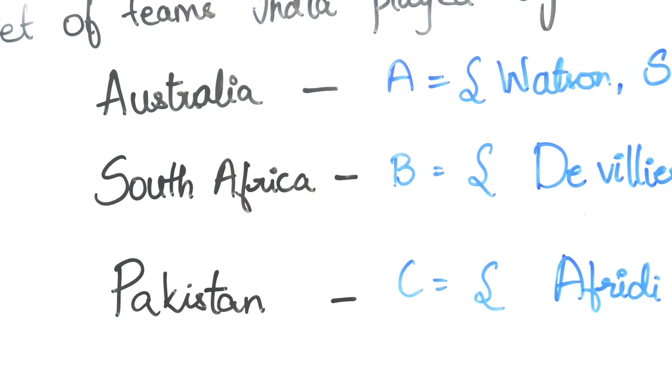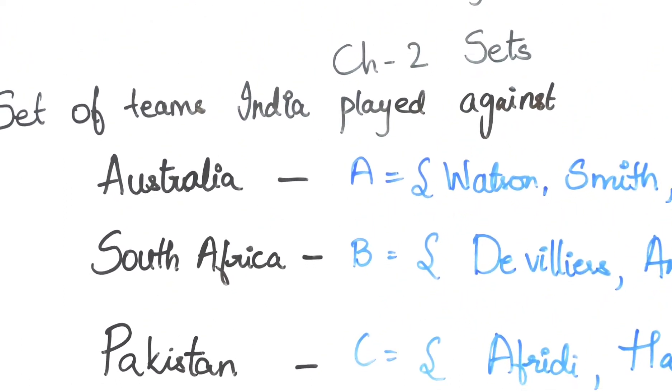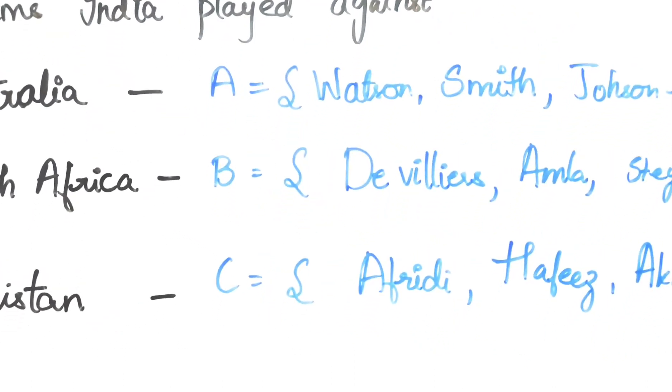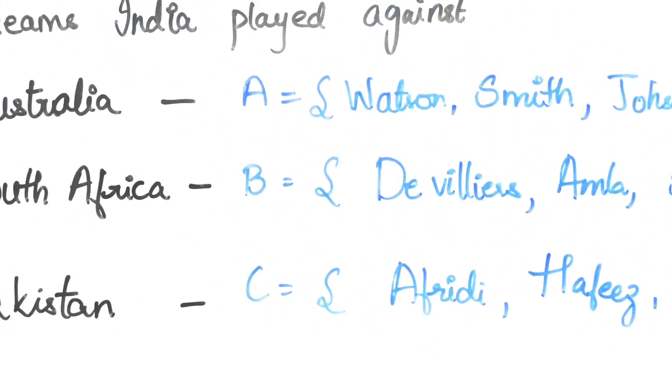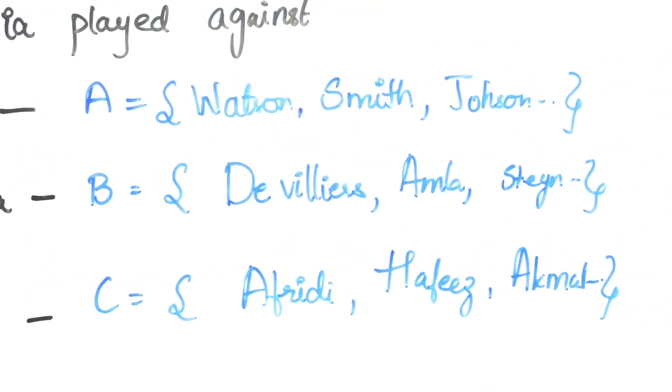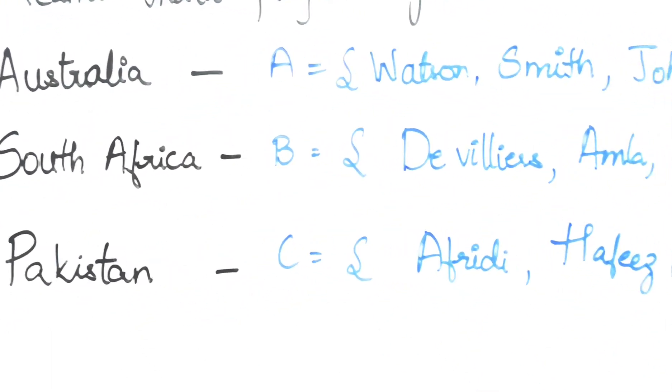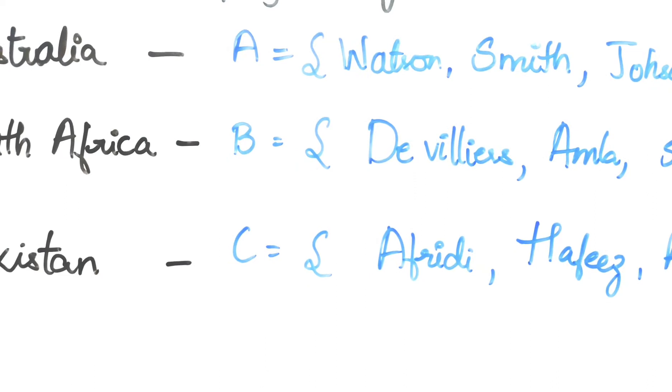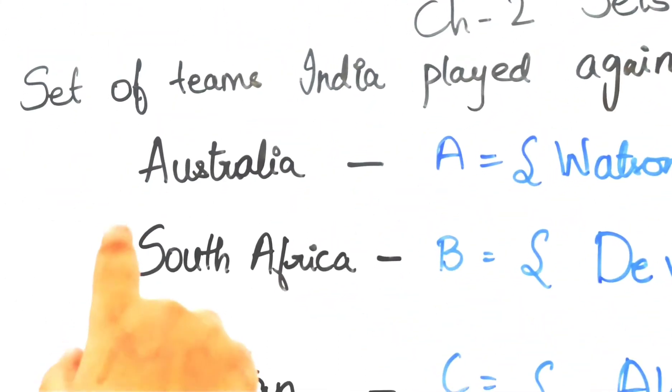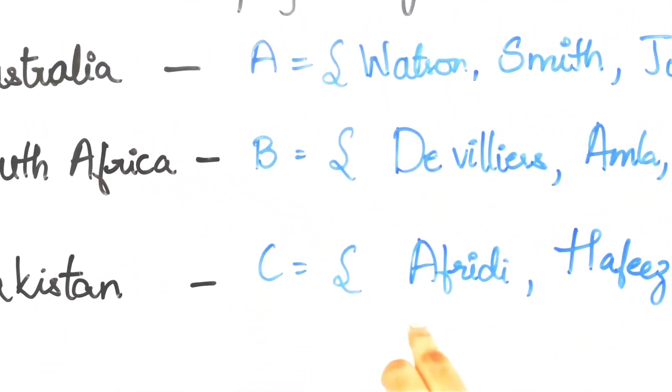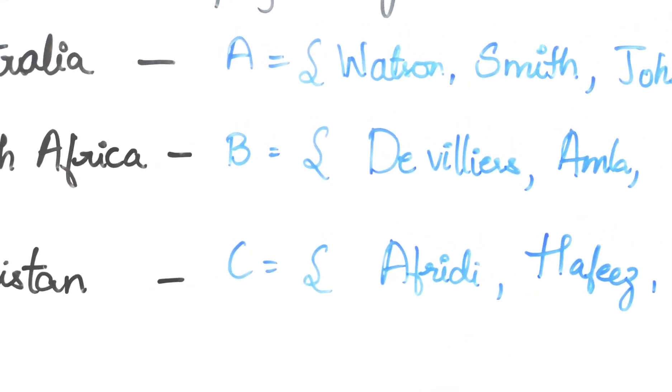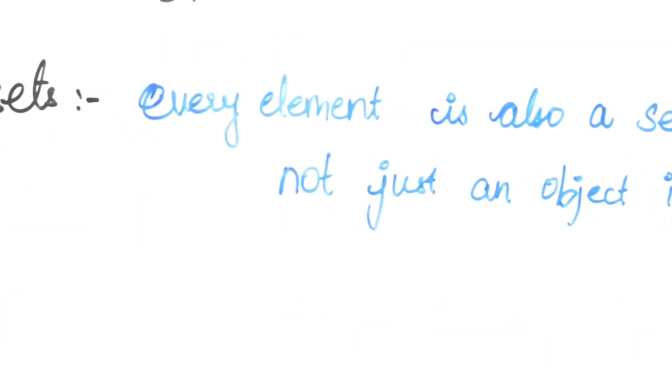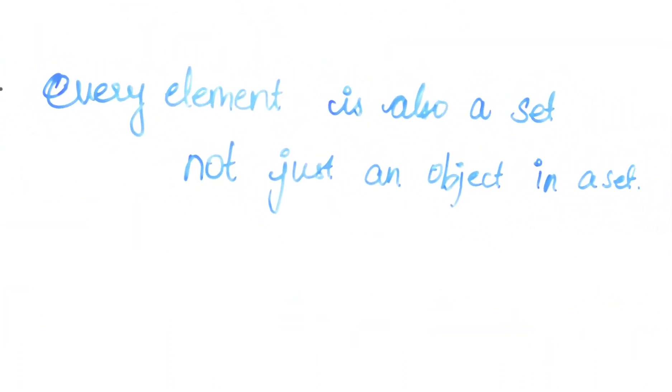Let's consider set of teams India played against. If we put down all the teams, each element of this set is a set in itself. Right? Australia is a set of Australian players. South Africa is a set of South African players. Pakistan is a set of Pakistan team. So every element in this large set is a set in a set. We call set of sets. Every element is also a set, not just an object in a set.